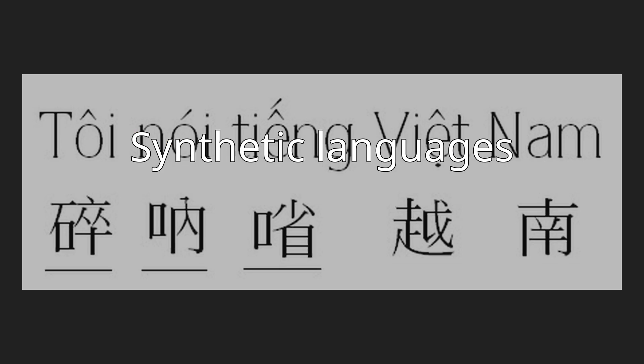Synthetic languages form words by affixing a given number of dependent morphemes to a root morpheme. The morphemes may be distinguishable from the root, or they may not. They may be fused with it, or among themselves, in that multiple pieces of grammatical information may potentially be packed into one morpheme. Word order is less important for these languages than it is for analytic languages, since individual words express the grammatical relations that would otherwise be indicated by syntax. In addition, there tends to be a high degree of concordance, agreement, or cross-reference between different parts of the sentence. Therefore, morphology in synthetic languages is more important than syntax.